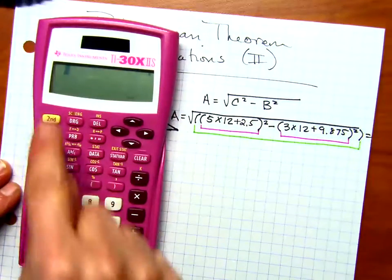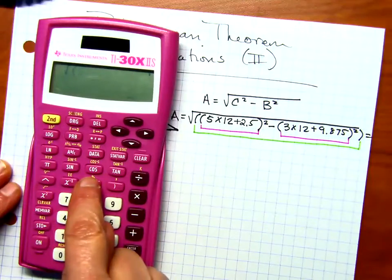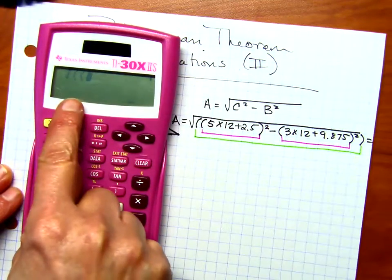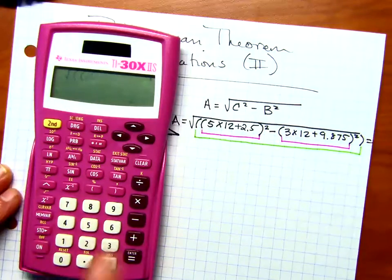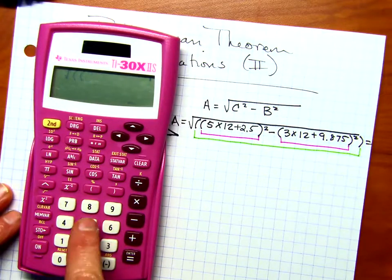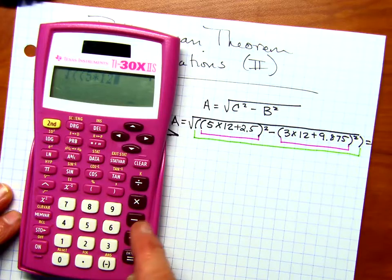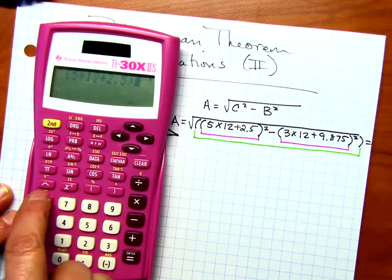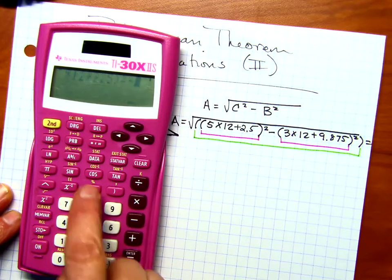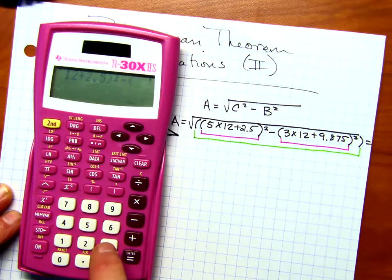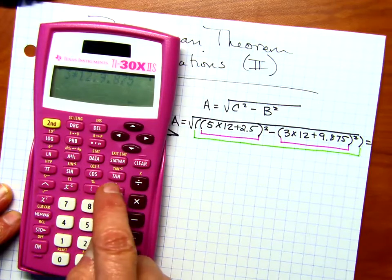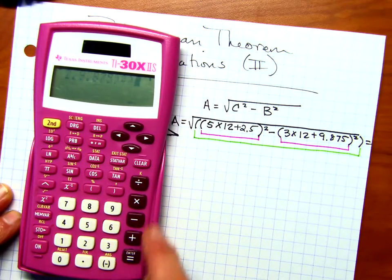Okay, so I'm going to do that. Make sure you punch the parentheses one more time. It automatically gives you one, but you want to add one more. So now, here we go. And then close before you hit the X2 button. Minus, open, and then 3 times 12 plus 9.875. Close, X2, close, enter.